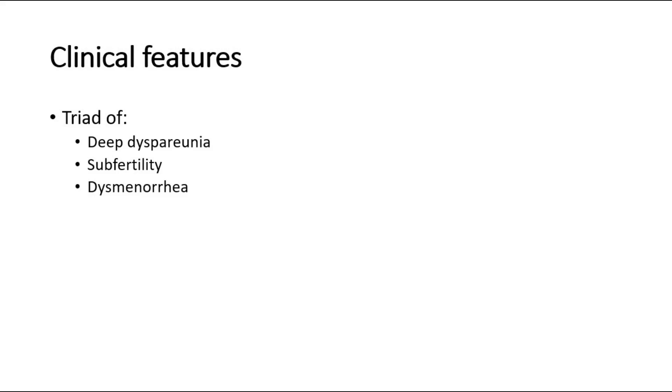For clinical features, there are three main clinical features of endometriosis, forming a triad of deep dyspareunia, subfertility, and dysmenorrhea. Dyspareunia means there is pain during sexual intercourse, whereas dysmenorrhea means there is pain during menstruation.